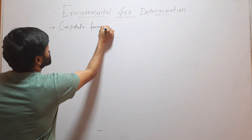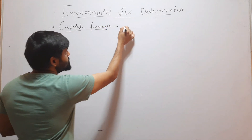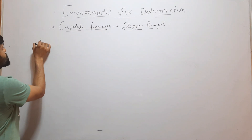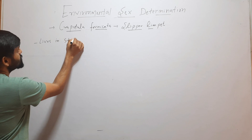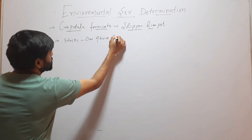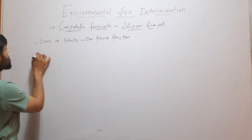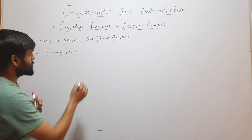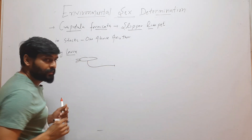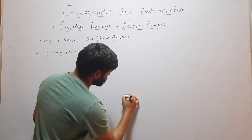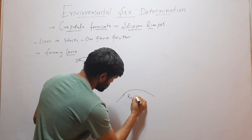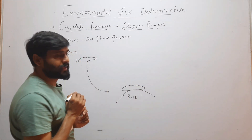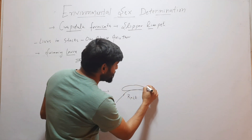The example is Crepidula fornicata, and its common name is slipper limpet. This is an organism which lives in stacks, one above another. It starts its lifecycle as a swimming larva, and when this swimming larva finds a rock, it will settle down there.